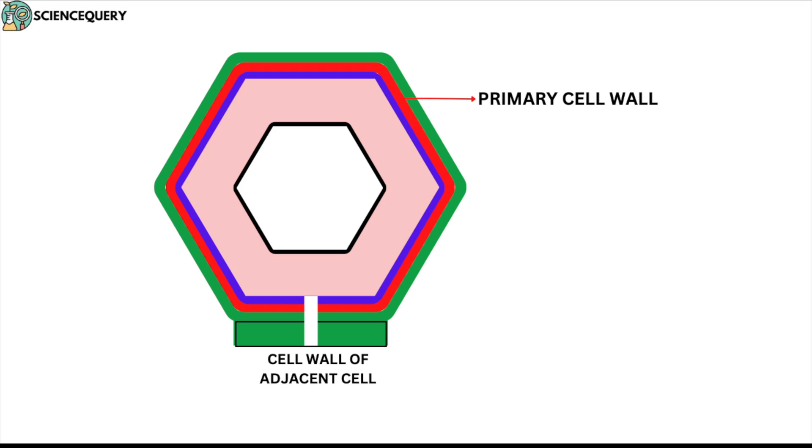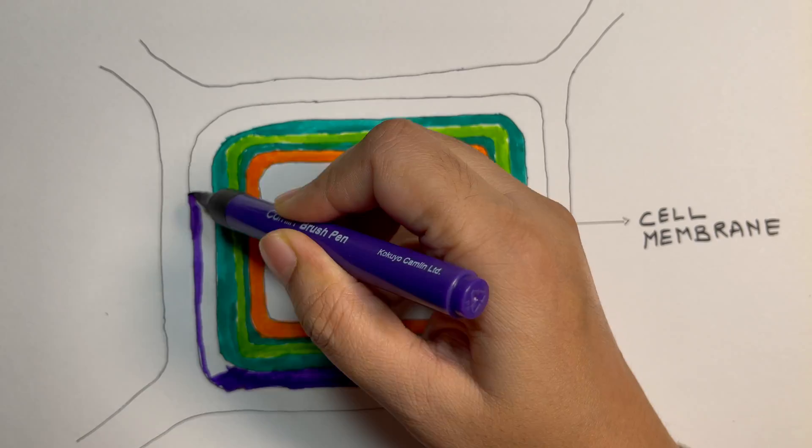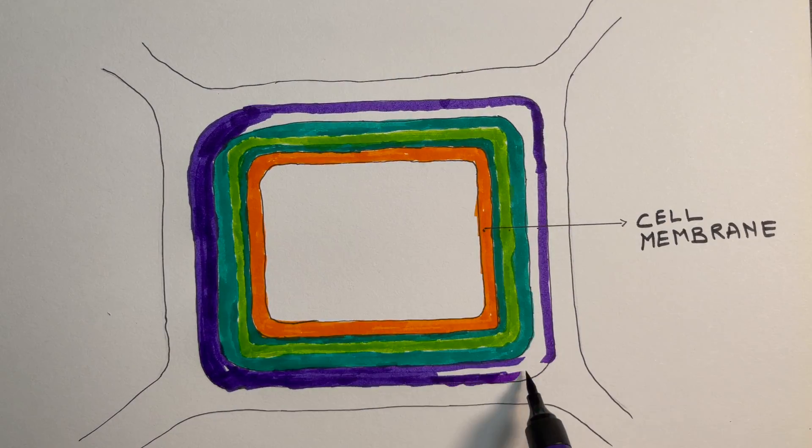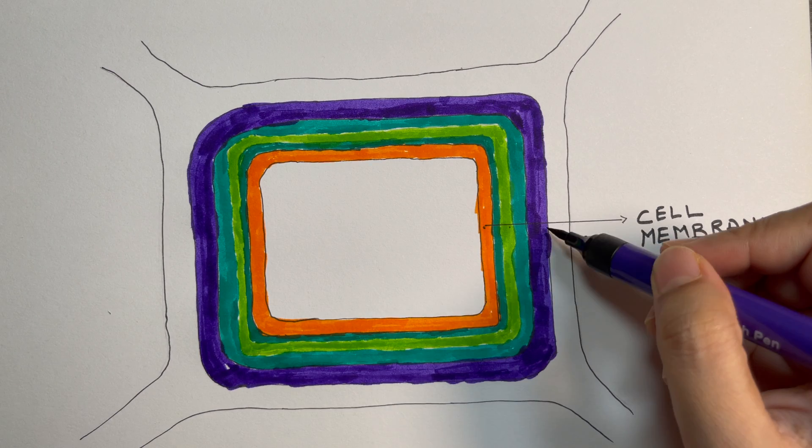Now let us see the primary cell wall. It is normally found in the young plant cell and gradually disintegrates as cells mature. This cell wall is capable of growth and it appears as a thin elastic layer. It is present in the inner of the middle lamella.